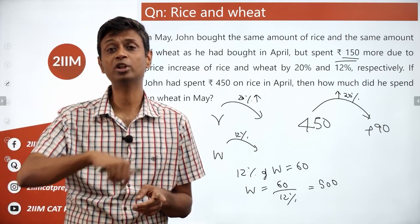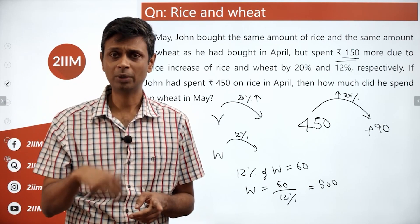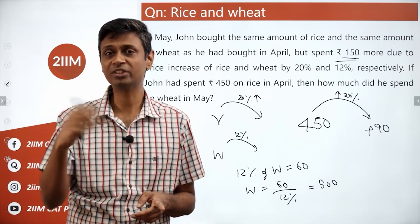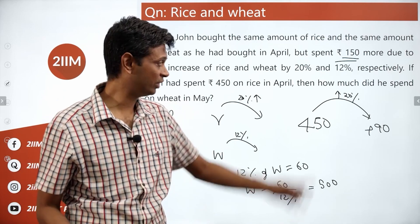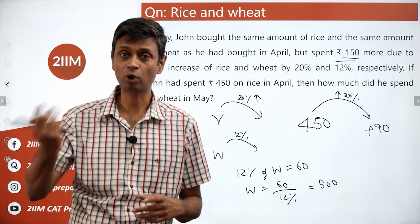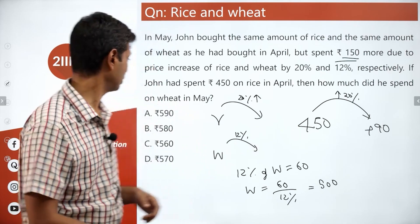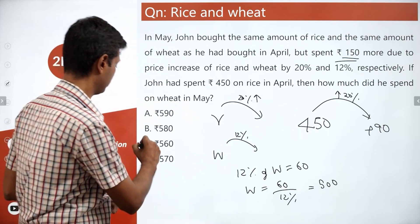In May, he should have spent 12% more. 12% of 500 — we have already seen that — is 60 more. 500 plus 60 is 560.